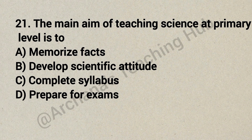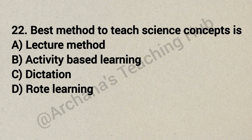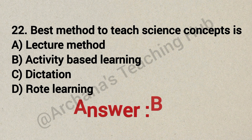Question 21: The main aim of teaching science at the primary level is to — Option A: memorize facts, Option B: develop scientific attitude, Option C: complete syllabus, Option D: prepare for exams. Correct answer is Option B: develop scientific attitude. Question 22: The best method to teach science concepts is — Option A: lecture method, Option B: activity-based learning, Option C: dictation, Option D: rote learning. Correct answer is Option B: activity-based learning.